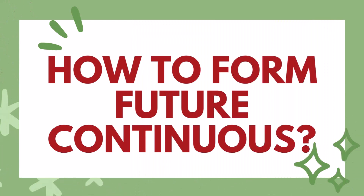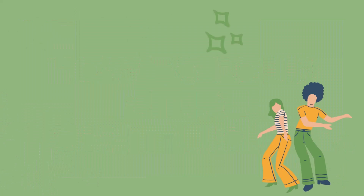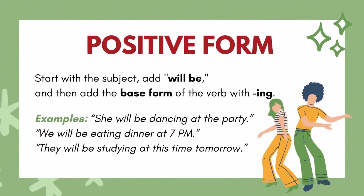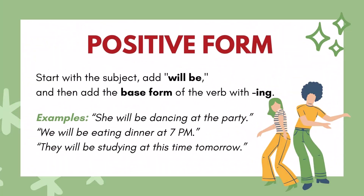How to form Future Continuous — Positive form: Start with the subject, add 'will be,' and then add the base form of the verb with '-ing.' Examples: 'She will be dancing at the party.' 'We will be eating dinner at 7pm.' 'They will be studying at this time tomorrow.'